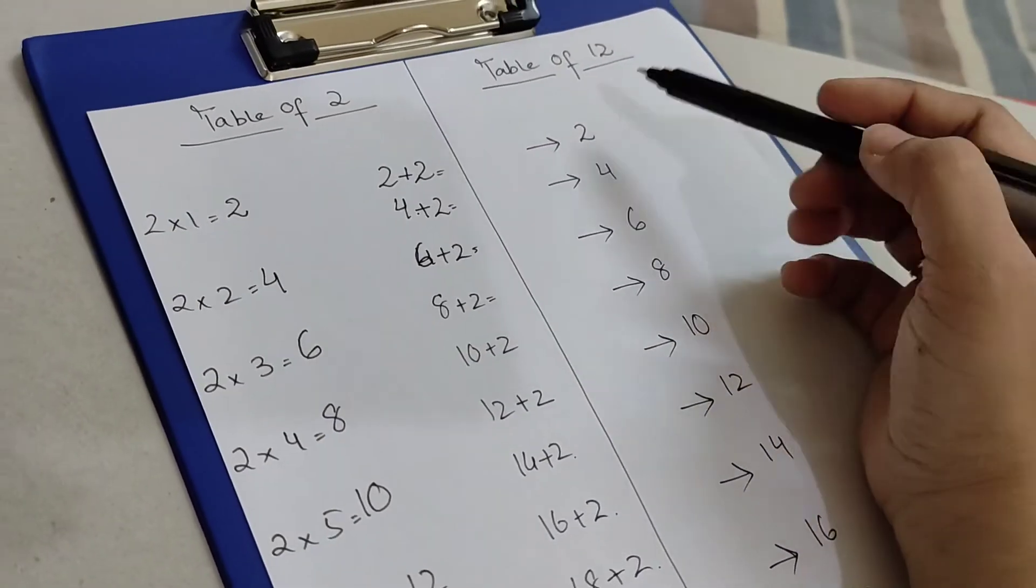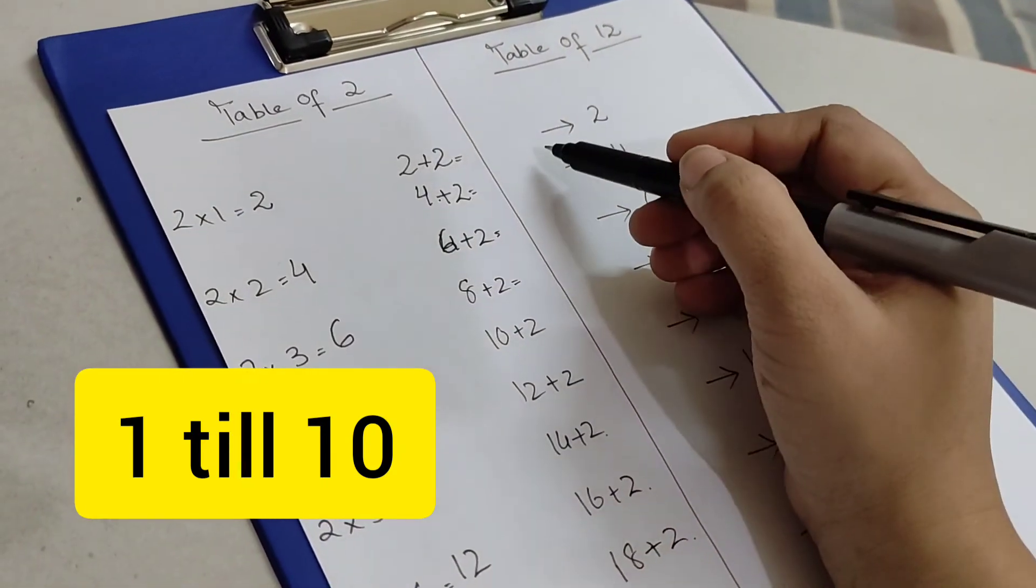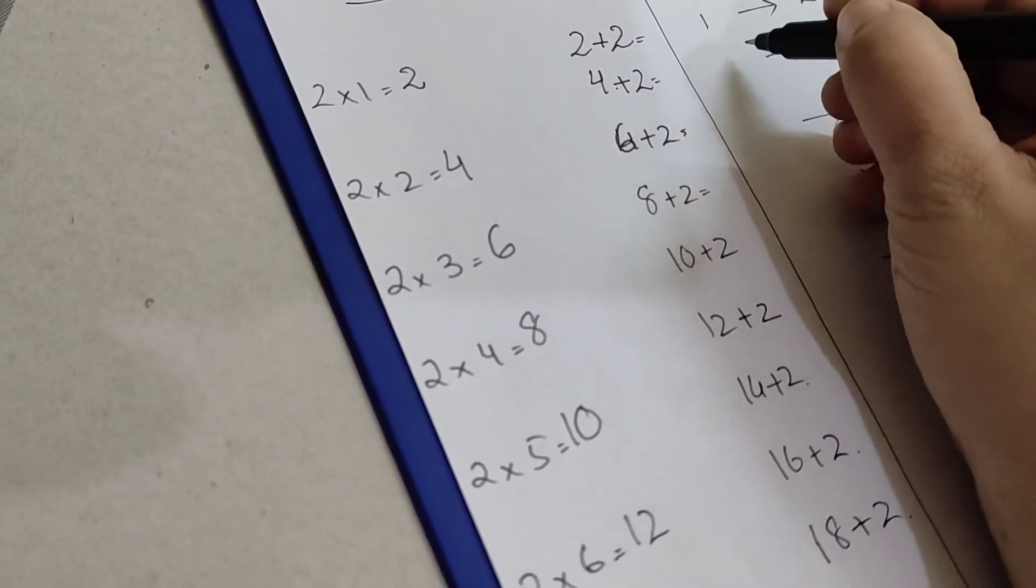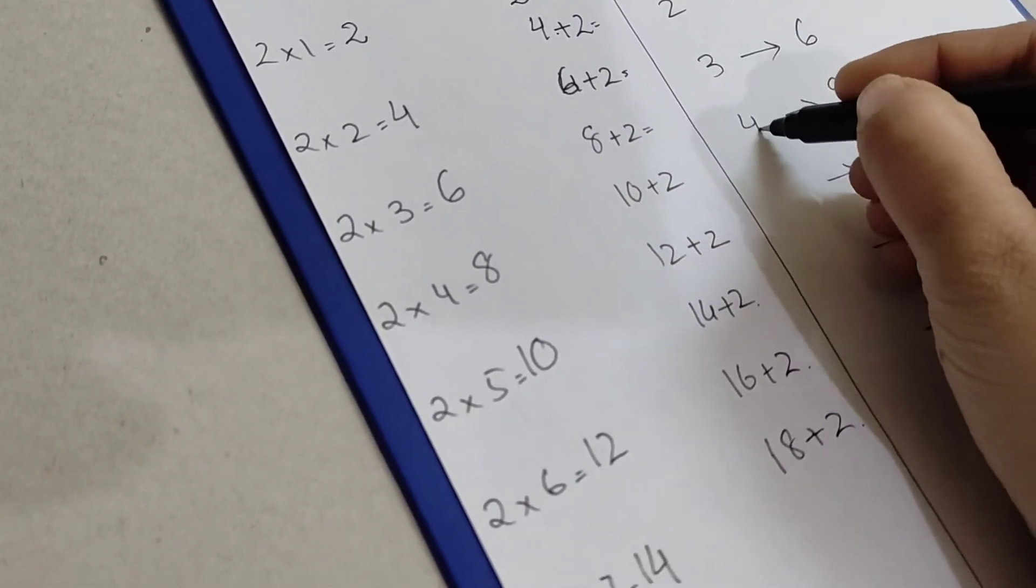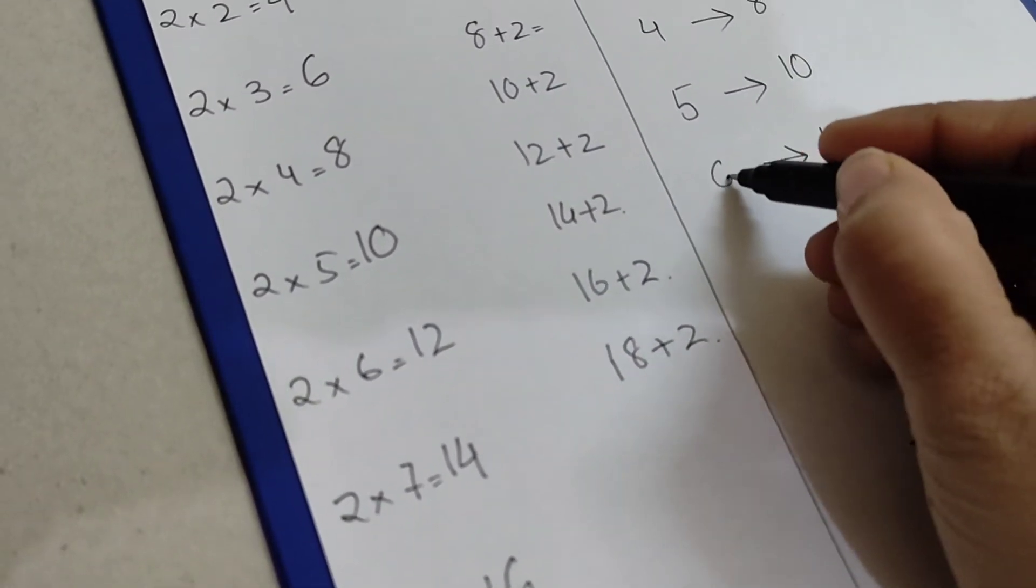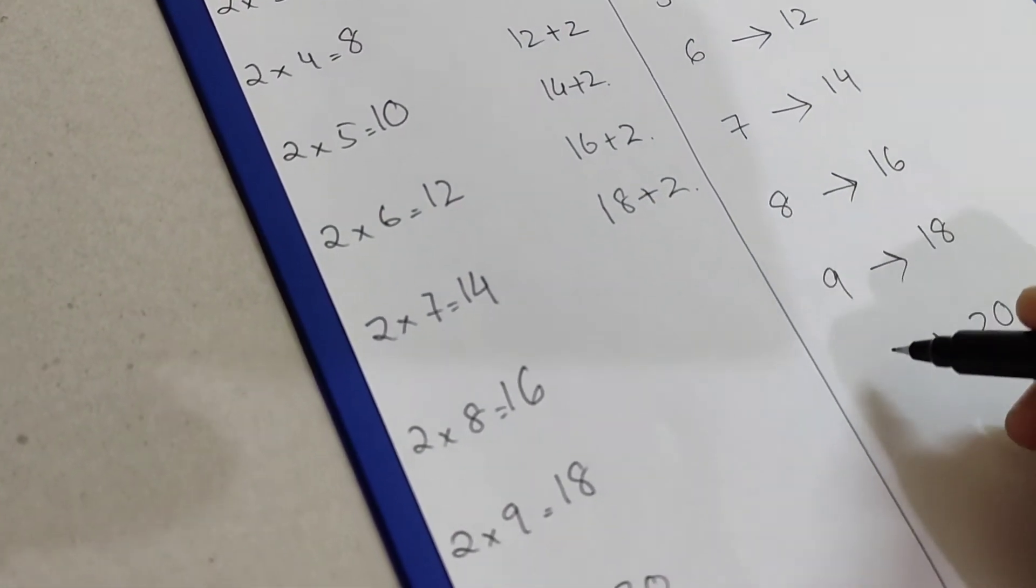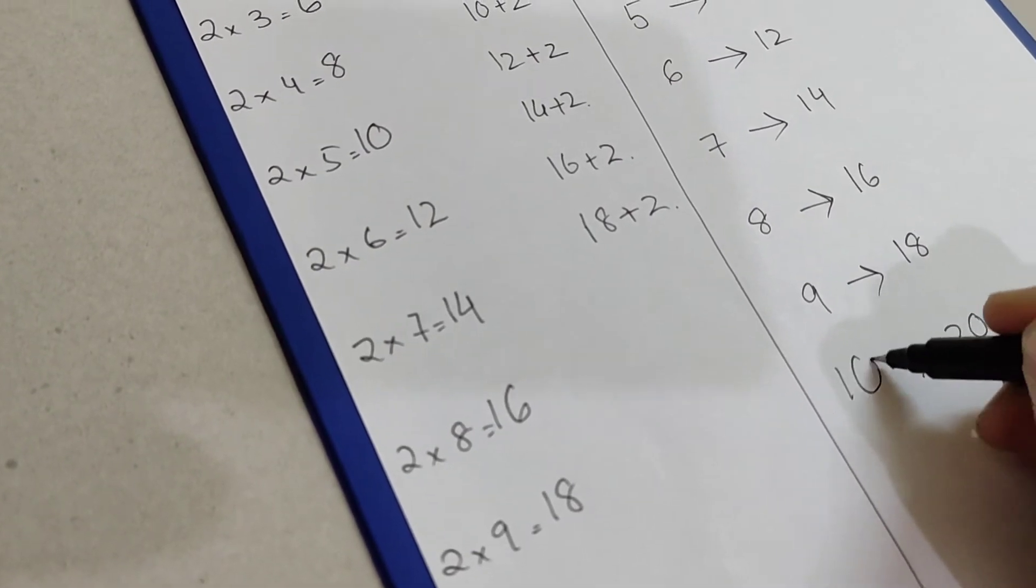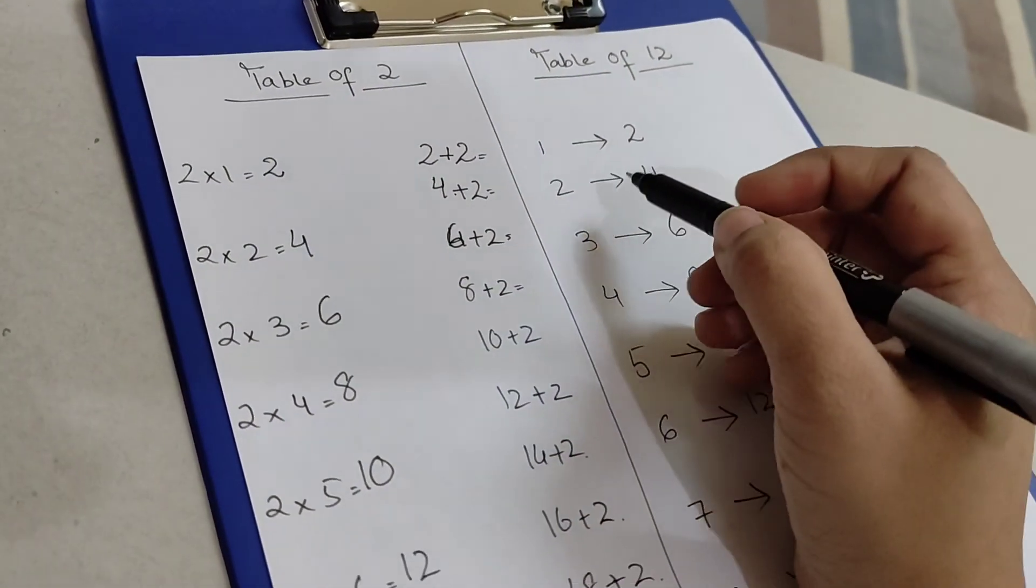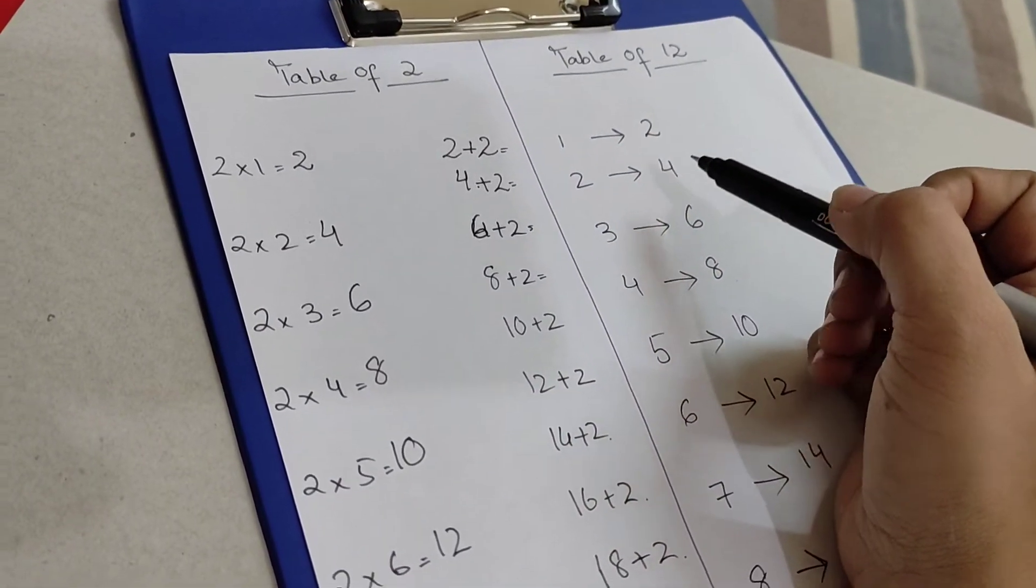Okay, so I wrote the two times table over here. What I'm going to do is I'm going to write the numbers from one to nine. Okay, all right.